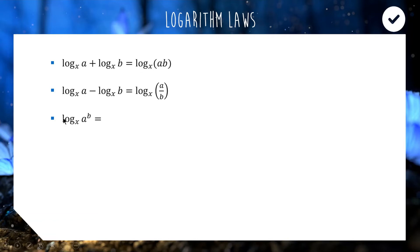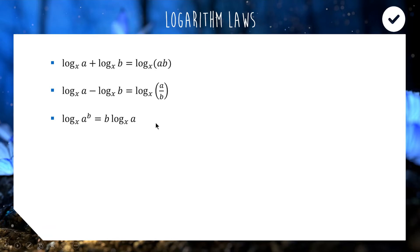The next one is an extension on that first property. If we have log base x of a to the power of b, a useful property is that the power b can come down to the front of the expression, so log of a to the b is the same as b times log base x of a. I call this the 'blogger rule' — b log a — and it's really useful. When you've got a power in the subject of your logarithm, the power can come down the front, or vice versa.